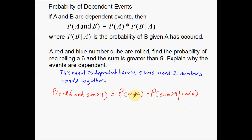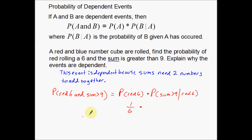What is the probability of getting a red six? If I roll the red cube, the probability of getting a six is one out of every six times. That's pretty straightforward. This first part is usually not that difficult to come up with. The second part, on the other hand, requires us to assume that we have already rolled a six.